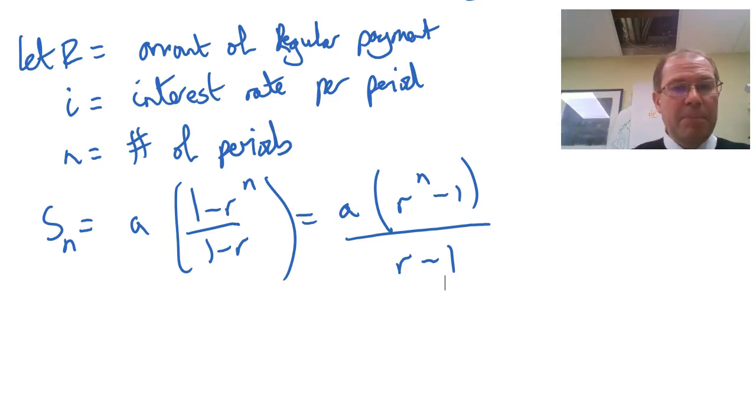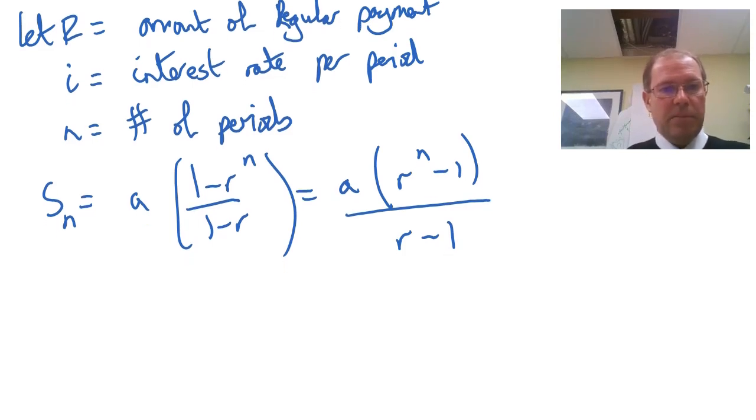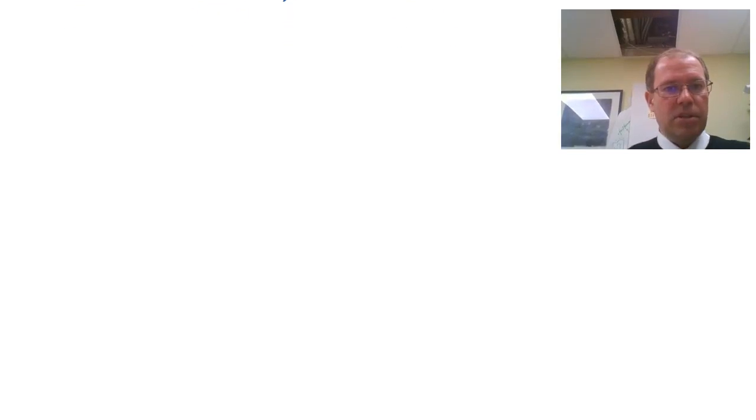The future value of an ordinary annuity is just the sum of the first N terms of a geometric progression. So now let's develop a formula for this. If we let capital R equal the amount of the regular payment, so in the example above we were putting $100 in a month, so capital R was 100. i is the interest rate per period, so above we were getting 6% over 12 months, so that was 0.5%, so 0.005. And N is the number of periods, and N in the example above was 36.